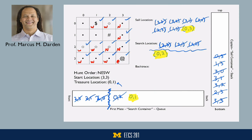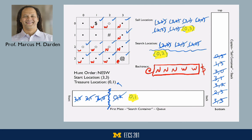If I start at my treasure location and work backwards using those directions, writing them in reverse order, I now have an actual path. From the start location, go north three times, then two wests, and I've got a solution. This is backtracing.